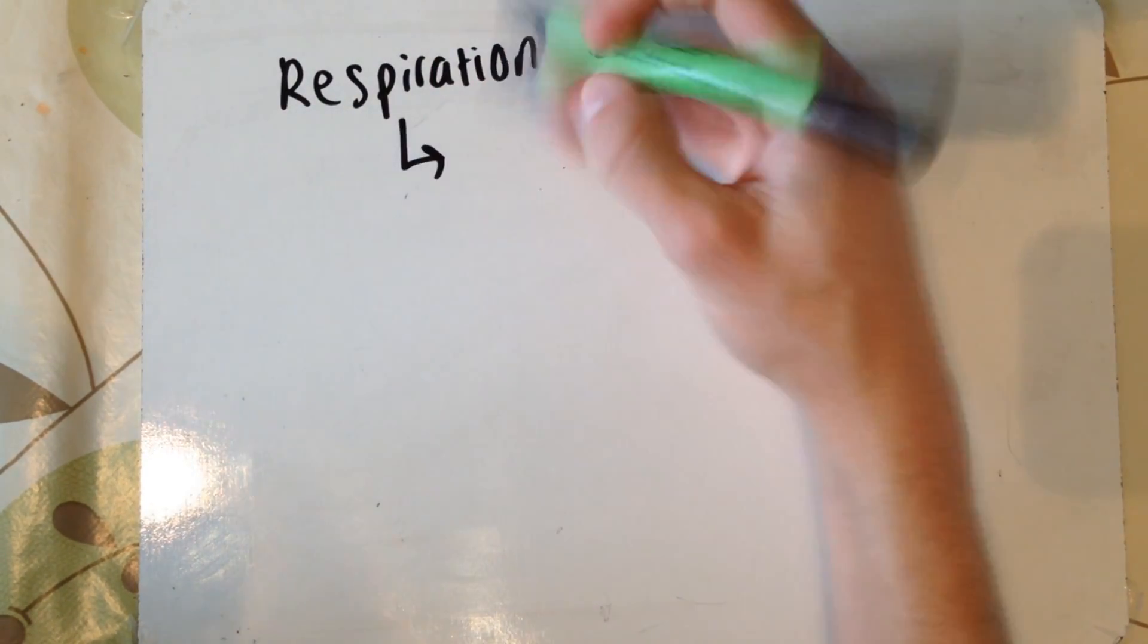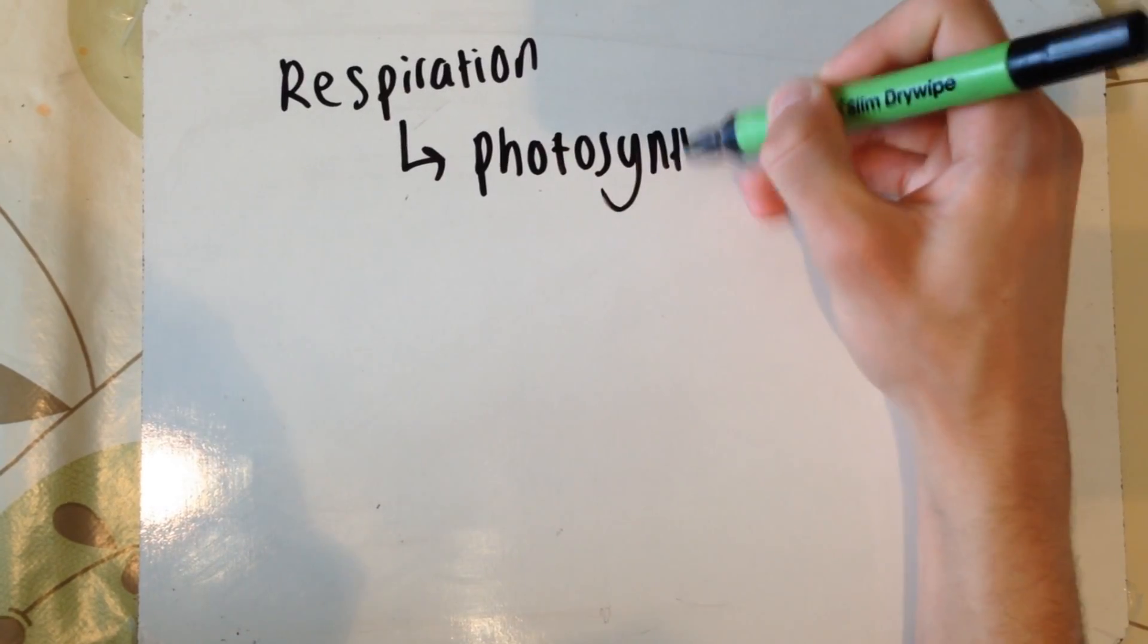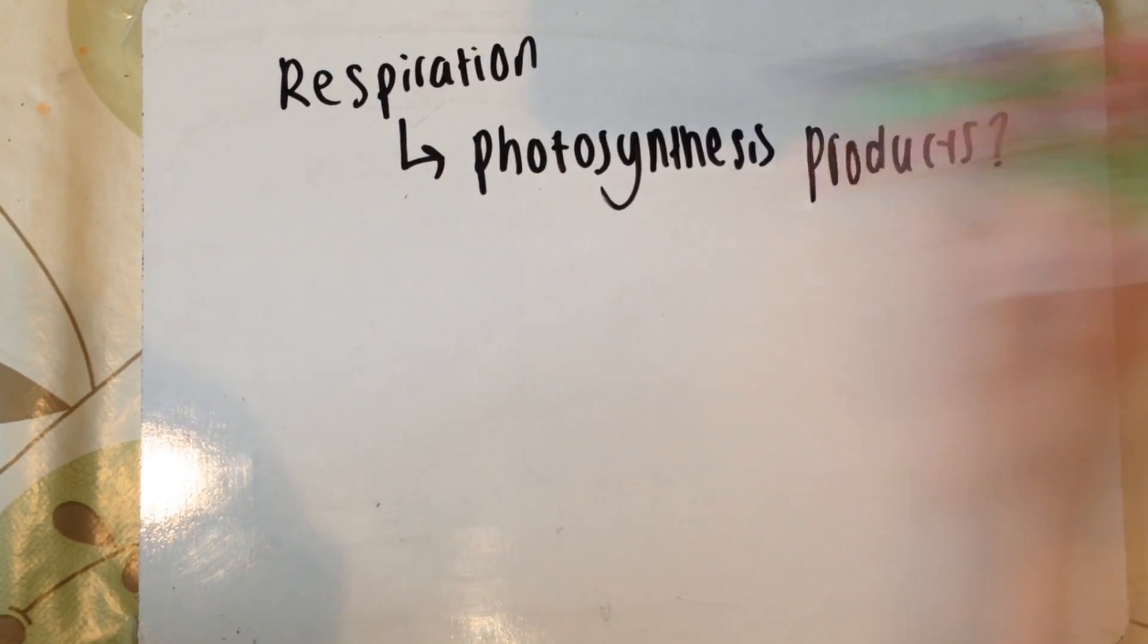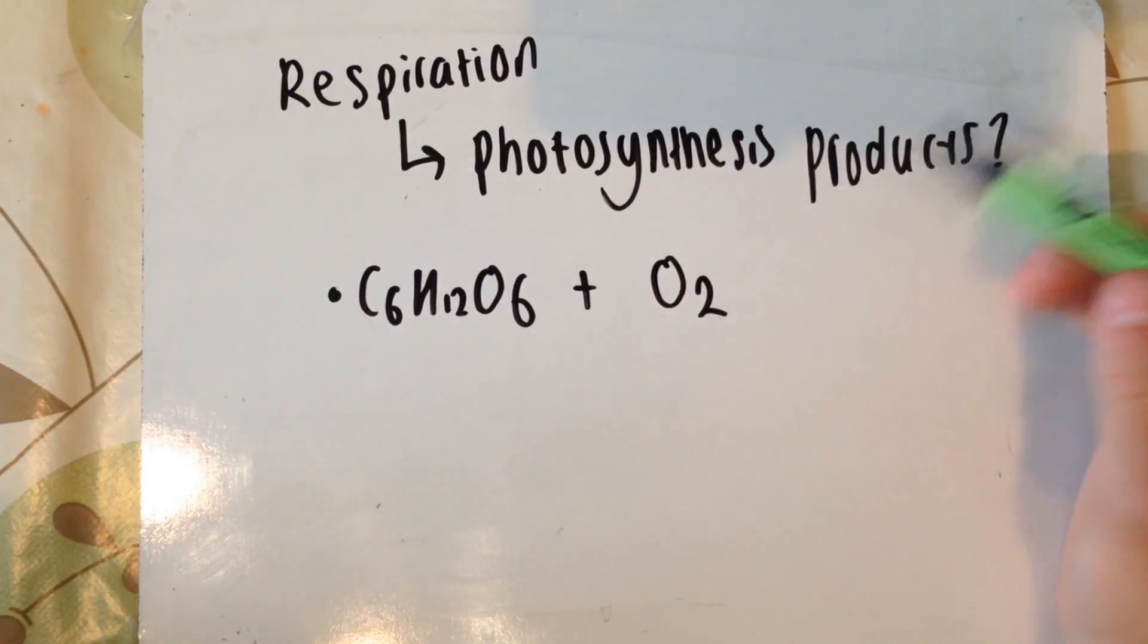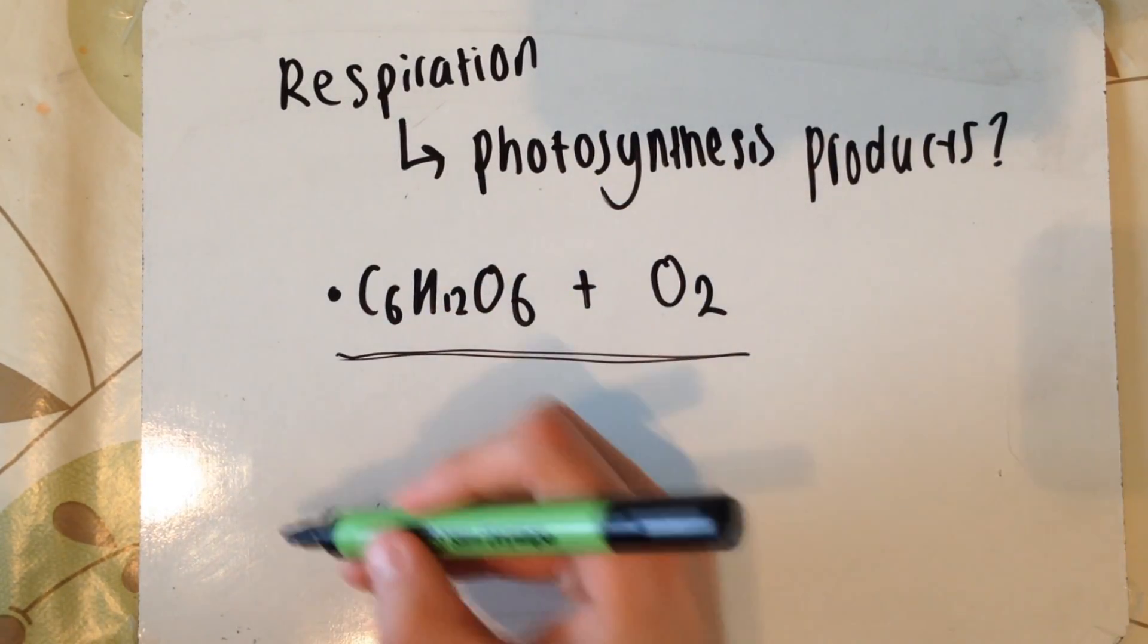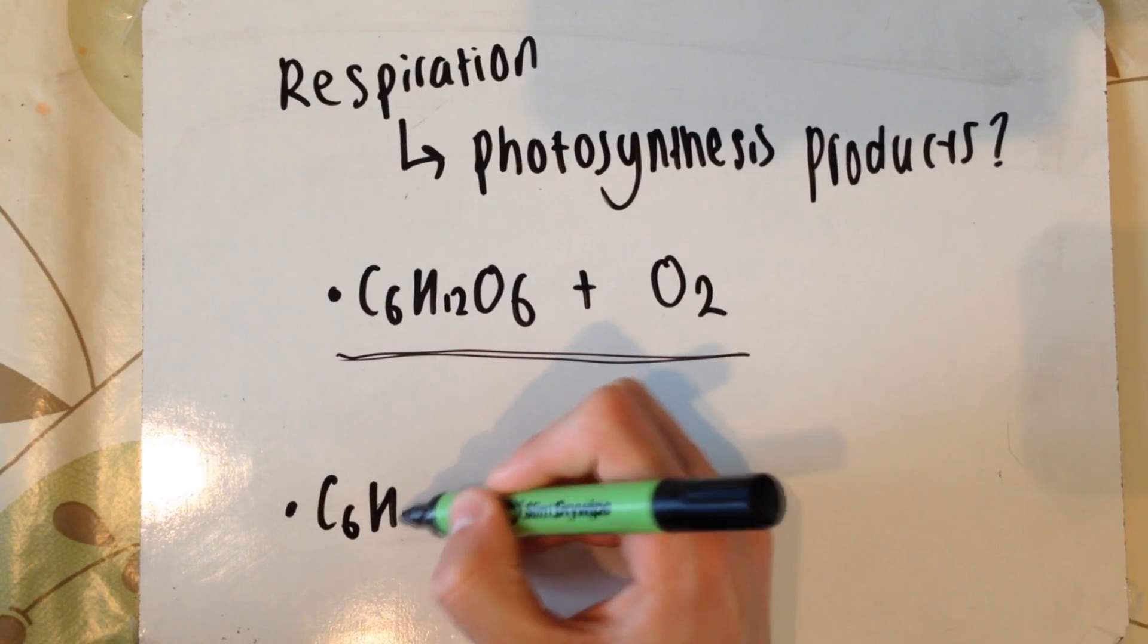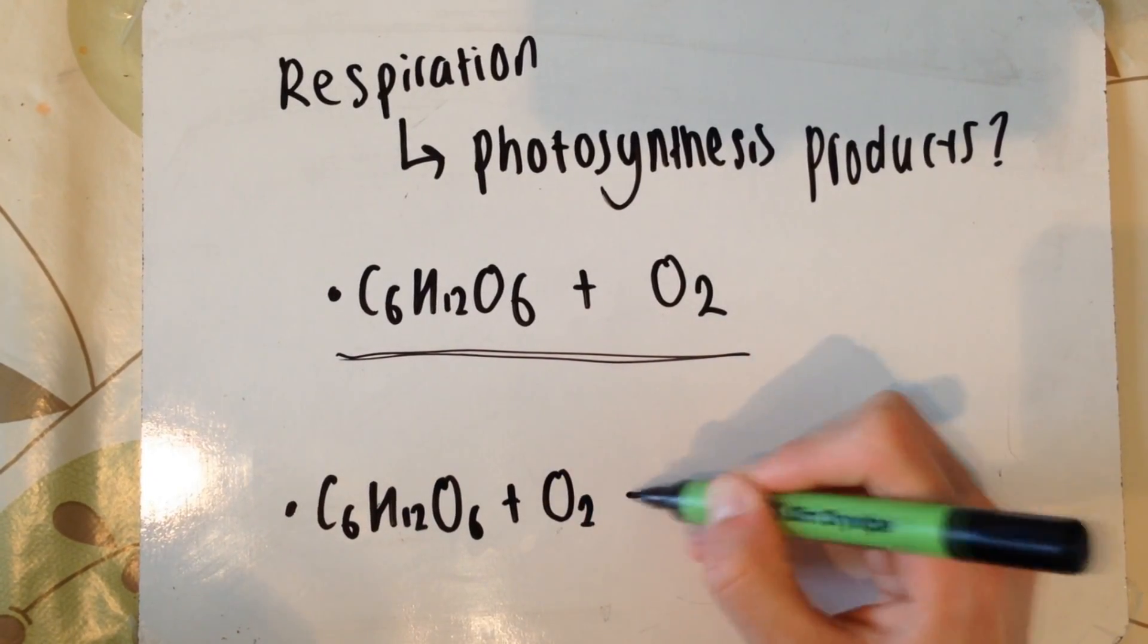It also asks us to explain how respiration in plants and animals really depends on the products of photosynthesis. So let's have a look. The products of photosynthesis, as you know, are glucose and oxygen: C6H12O6 plus O2.